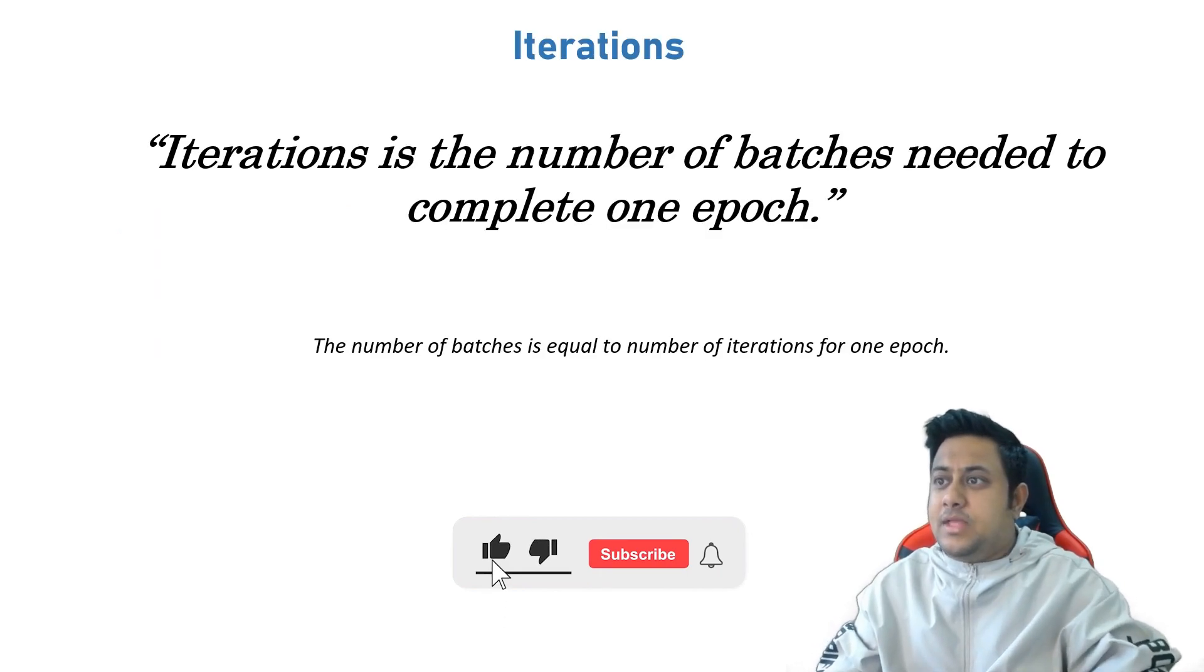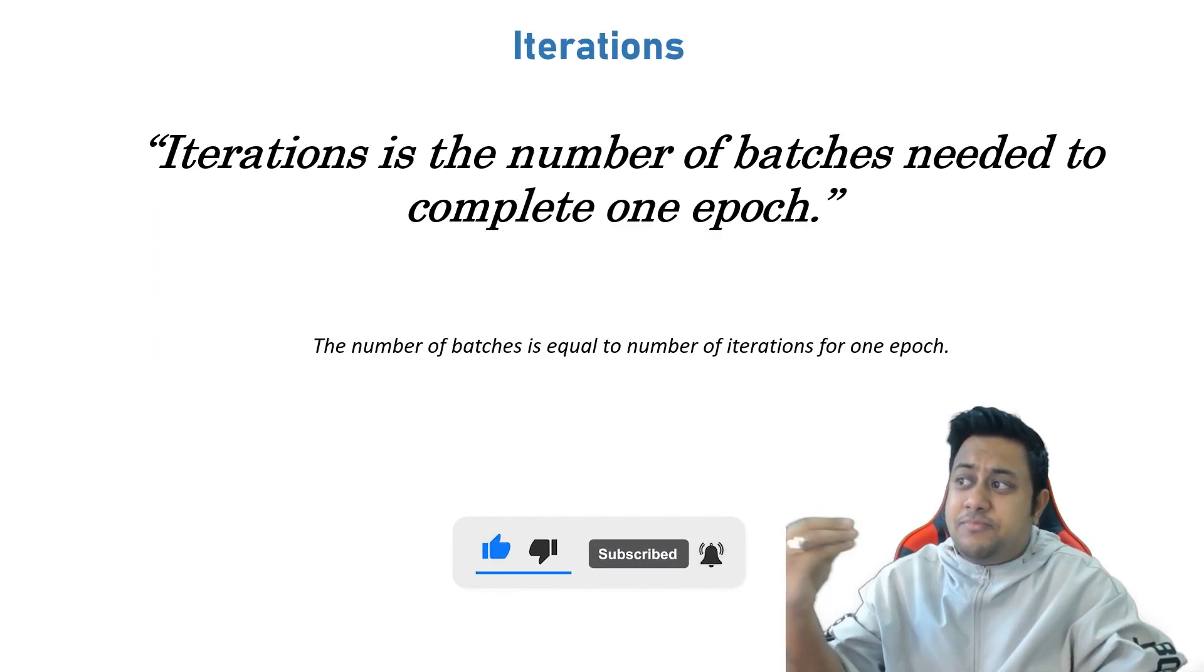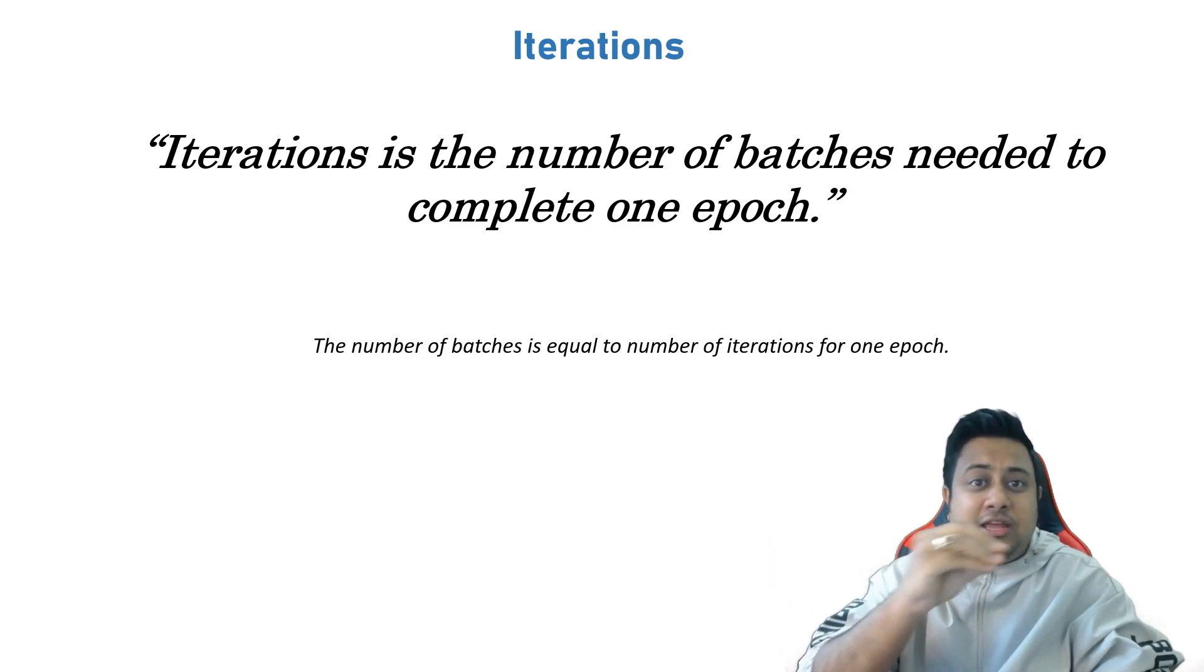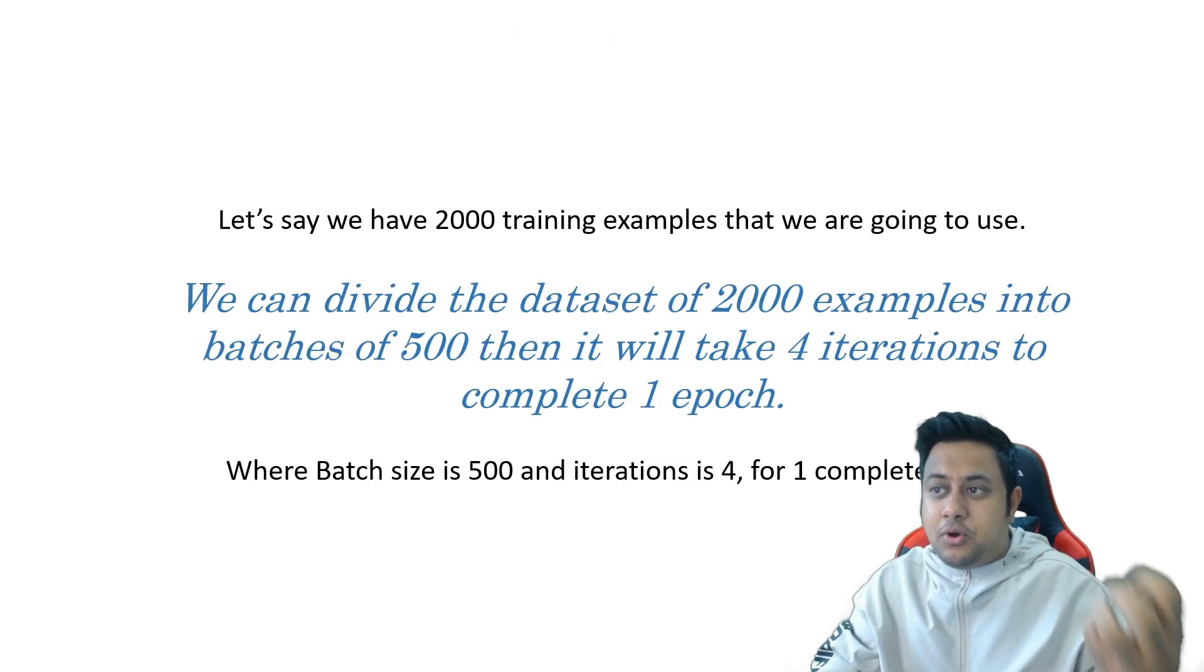Now what are iterations? Iteration is the number of batches needed to complete one epoch. The number of batches is equal to number of iterations for one epoch.